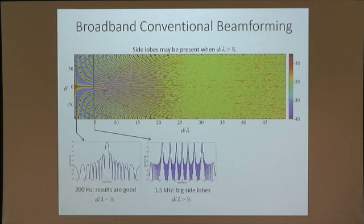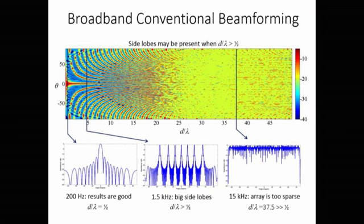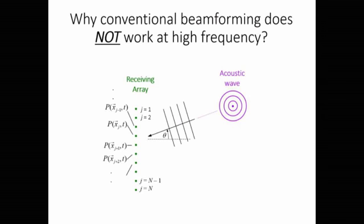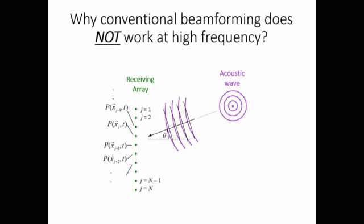The reason it fails at high d/λ is that we assume receivers receive plane waves. However, when d >> λ, the receivers are feeling the curvature of the wavefronts—they are no longer receiving plane waves. That is why plane wave beamforming stops working.